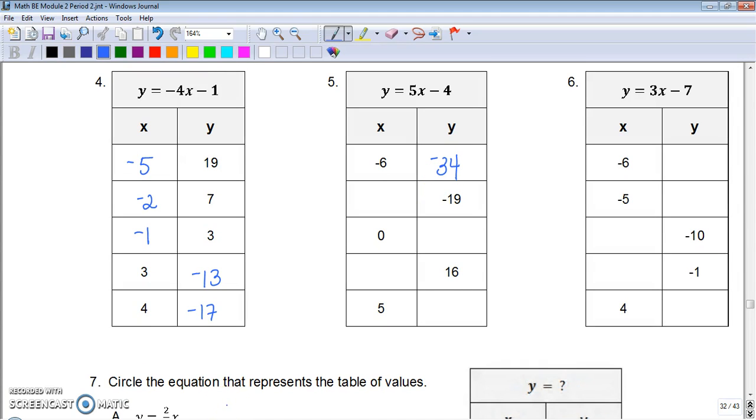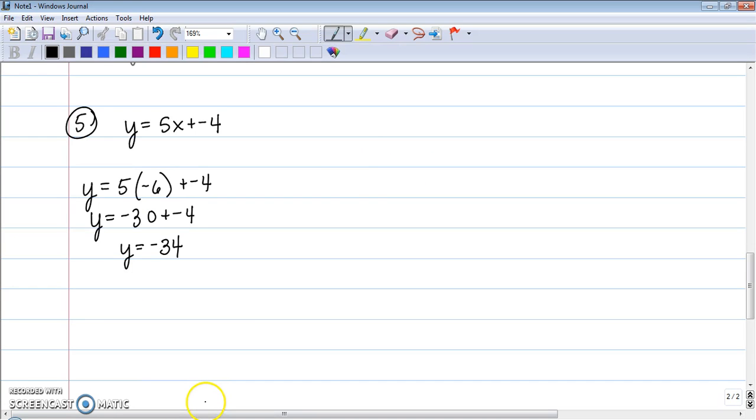I'm going too fast. Please feel free to pause the video or go back. Then they give us the y value, which is negative 19, and we're going to solve for x. Negative 19 plus 4. Negative 19 is more dominant, so we get a negative number, and 19 minus 4 is 15. Divide both sides by 5, and we get negative 3 is our x value.